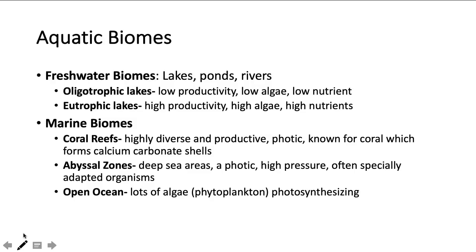Marine biomes you should definitely know coral reefs and definitely know abyssal zones. Coral reefs are super diverse. Think lots of fish, lots of different types of corals, lots of light. So they're in a photic zone and they're known for coral, which coral is made up of a calcium carbonate shell. That's kind of one of their defining characteristics for that ocean zone. Abyssal zones, think about our tube worm assignment we did in class. They're going to be super deep sea areas, super high pressure, absolutely no light. So they are considered aphotic. And sorry, aphotic should be all smushed together in that word there. High pressure and then also specially adapted organisms like the tube worms we talked about in class. So they might be doing chemosynthesis instead of photosynthesis since there's no light. And then also know that the open ocean is full of lots of algae, which is also known as phytoplankton. So there's plenty of photosynthesizing going on.